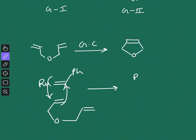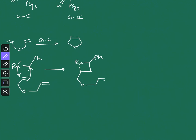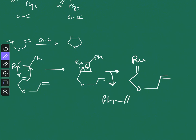The 2+2 cycloaddition gives a metallacycle intermediate. This metallacycle then collapses: one bond goes here and the other goes here. This completes the first step, and styrene is released as a side product.